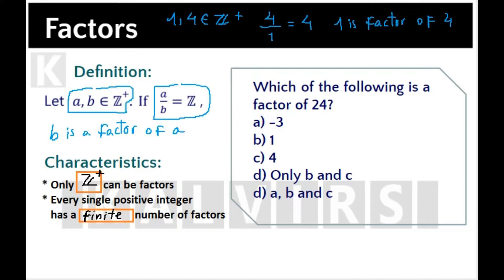For the question in the box, which of the following is a factor of 24? Let's go with alternative A: minus 3. According to the definition, only positive integers can be factors. Minus 3 is a negative integer, so this alternative is discarded. It cannot be a factor of 24.